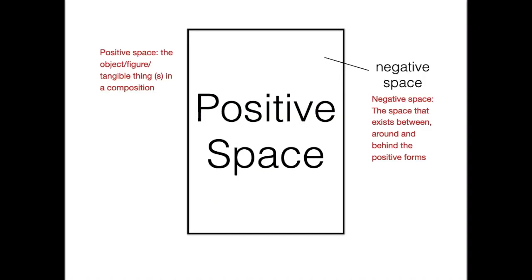To start off with positive and negative space: positive space is the object, figure, or tangible thing or things in a composition. Negative space is the space that exists between, around, and behind the positive forms. In this example, the black rectangle is the frame of the drawing, the 'positive space' text is the positive space, and the rest of the white space behind the text is the negative space.